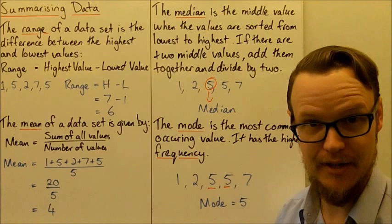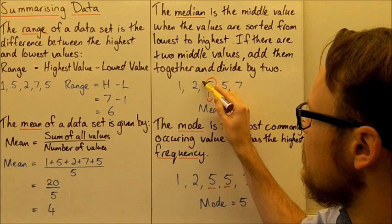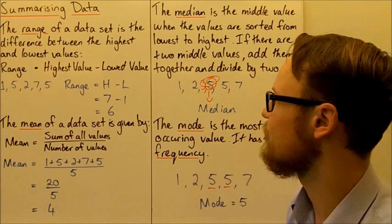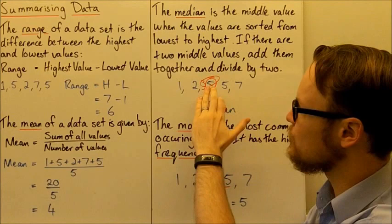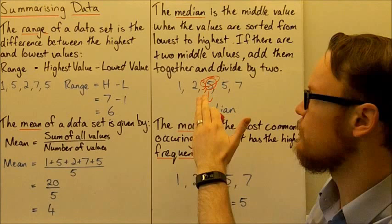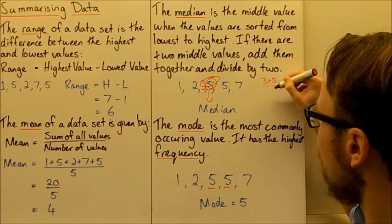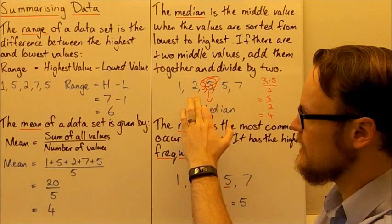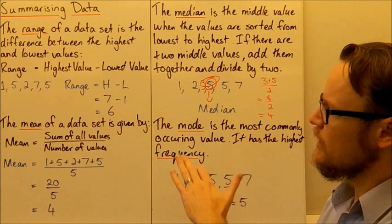If we have two middle values — say we get another data point, a 3 — and put them in order, we now have two middle values: 3 and 5. Because we've got two in the middle, we can't say they're both the median. So what we do is add them up and divide by 2. So 3 plus 5 is 8, divided by 2 is 4. So if we had a 3 in this data set as well, the median would be 4, not 5.